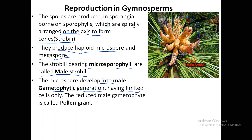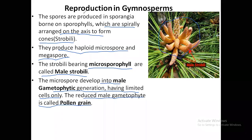Microspores develop into the male gametophyte generation, having limited cells only. We have discussed that the life cycle can be divided into two parts: the gametophyte stage and the sporophyte stage. Generally, spores when they germinate or grow will develop into the gametophyte. The gametophyte generation develops from the male microspore and has only limited cells. The reduced male gametophyte is called the pollen grain — a similarity with the angiosperms or flowering plants — and this pollen grain is also the male gamete in case of flowering plants.